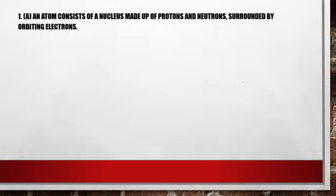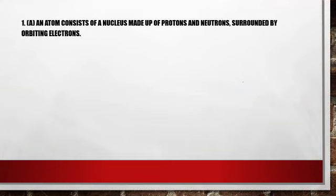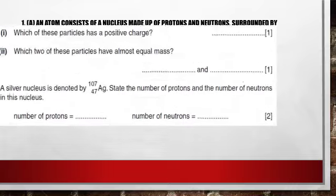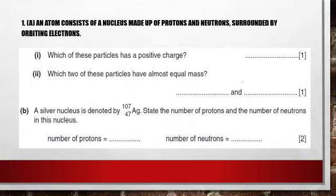Here is the first problem. An atom consists of a nucleus made up of protons and neutrons surrounded by orbiting electrons. The first question is, which of these particles has a positive charge? Obviously, the answer is proton. Next, which two of these particles have almost equal mass? The answers are proton and neutron.